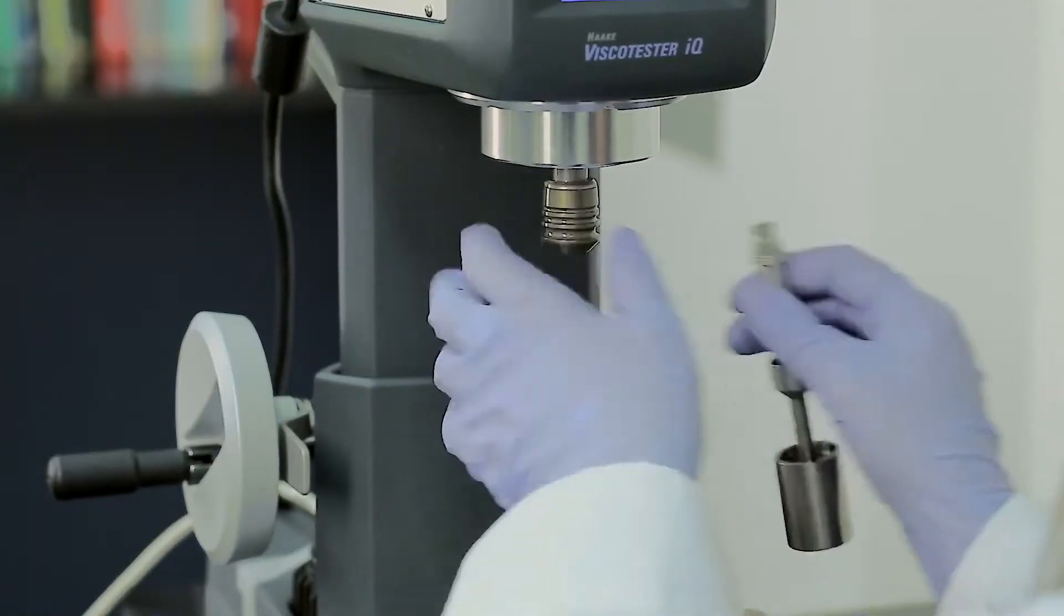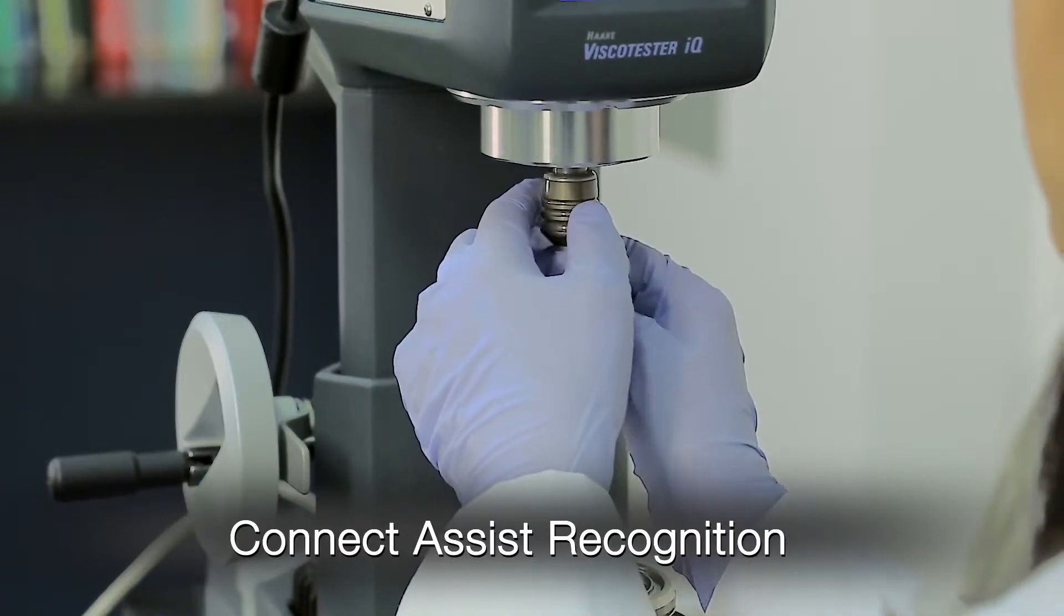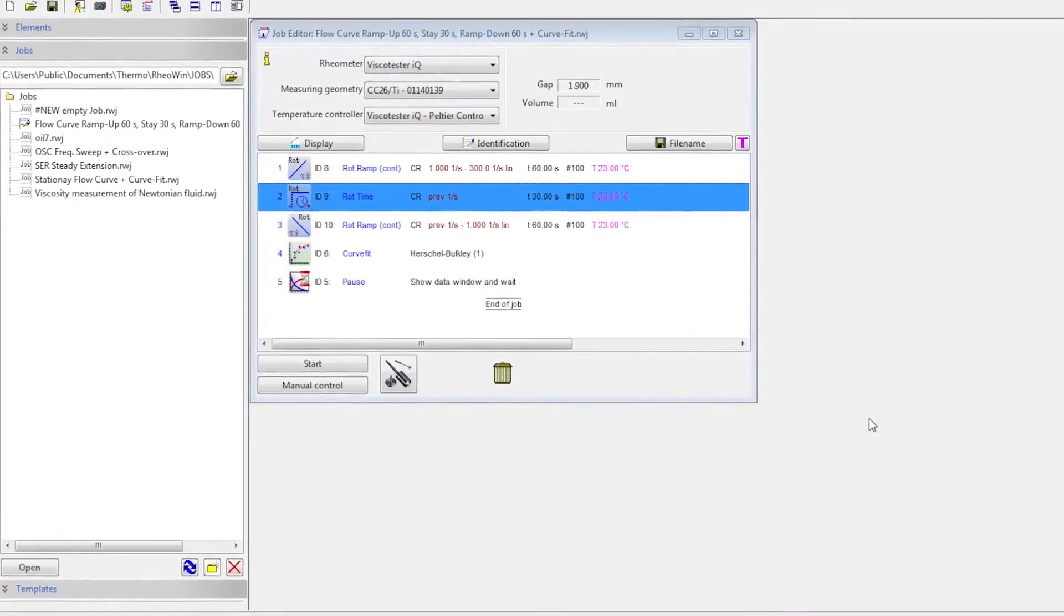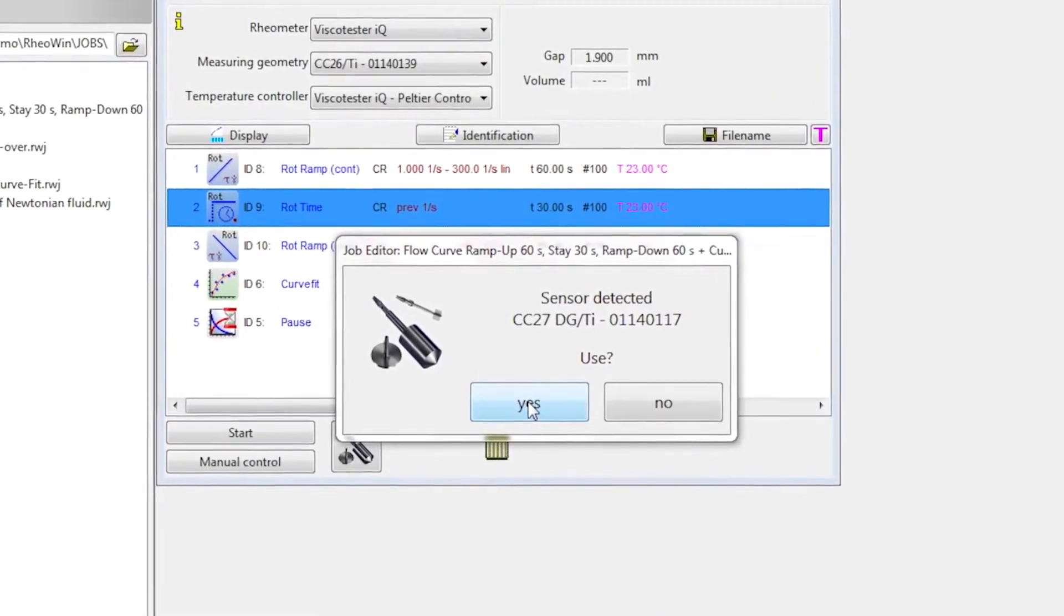The exclusive Connect Assist provides new quick coupling capabilities for measuring geometries and temperature modules and guarantees perfect alignment, automatic recognition, and integrated feedback for job optimization.